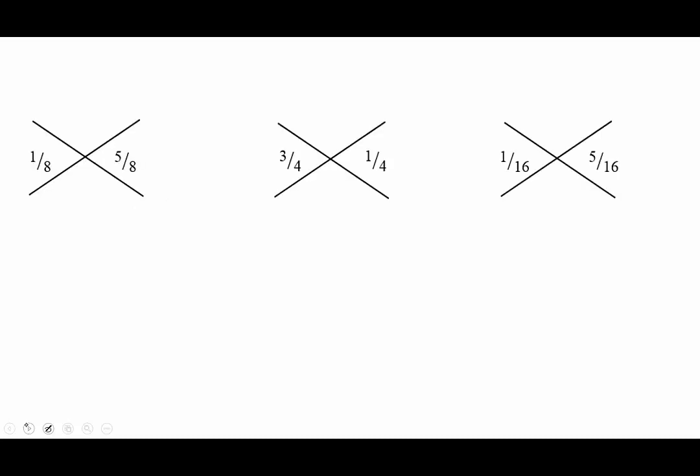Diamond problems with fractions. Here we have a few diamond problems. Remember that you multiply to get the top number and you add to get the bottom number. So 1/8 times 5/8. When you multiply fractions, you multiply top times top and bottom times bottom.